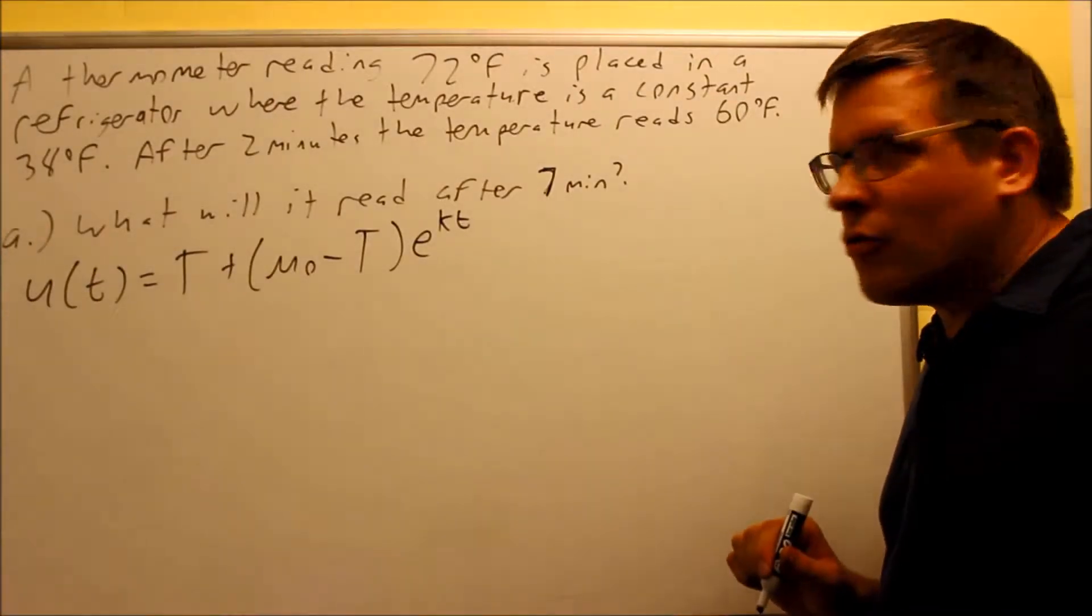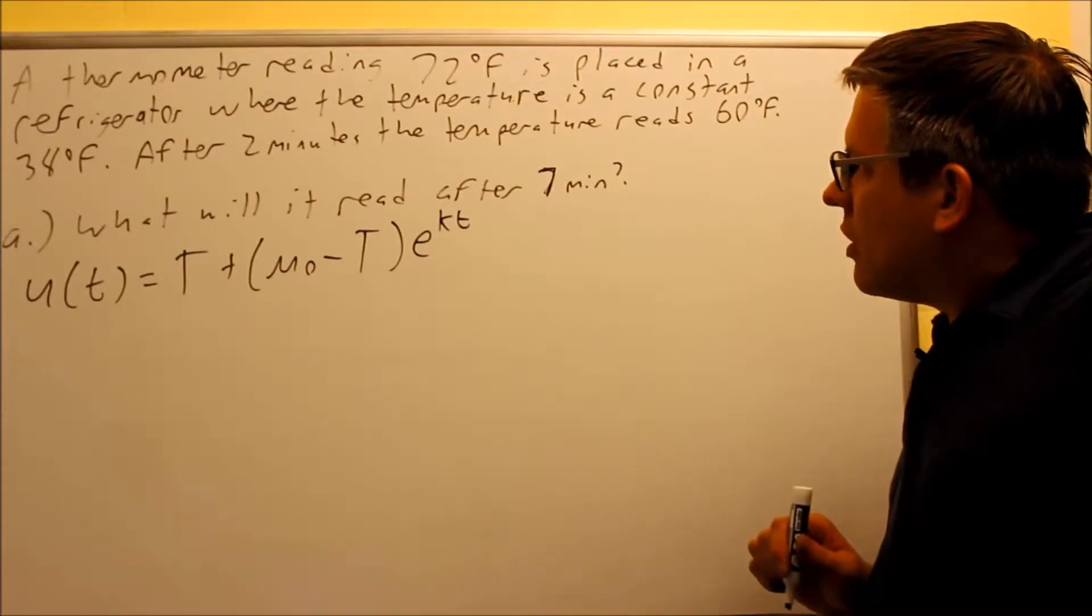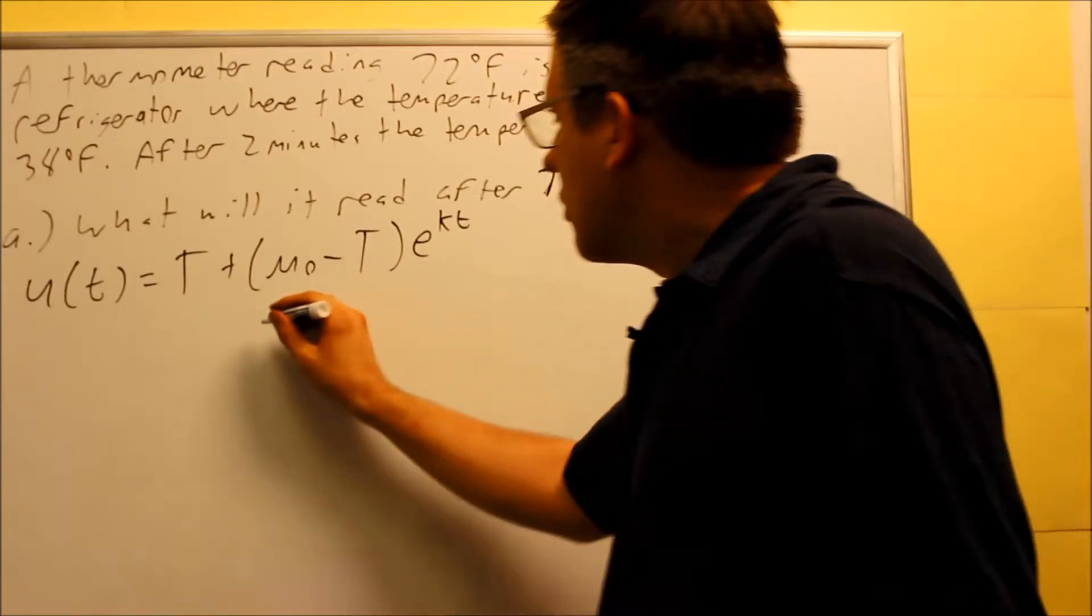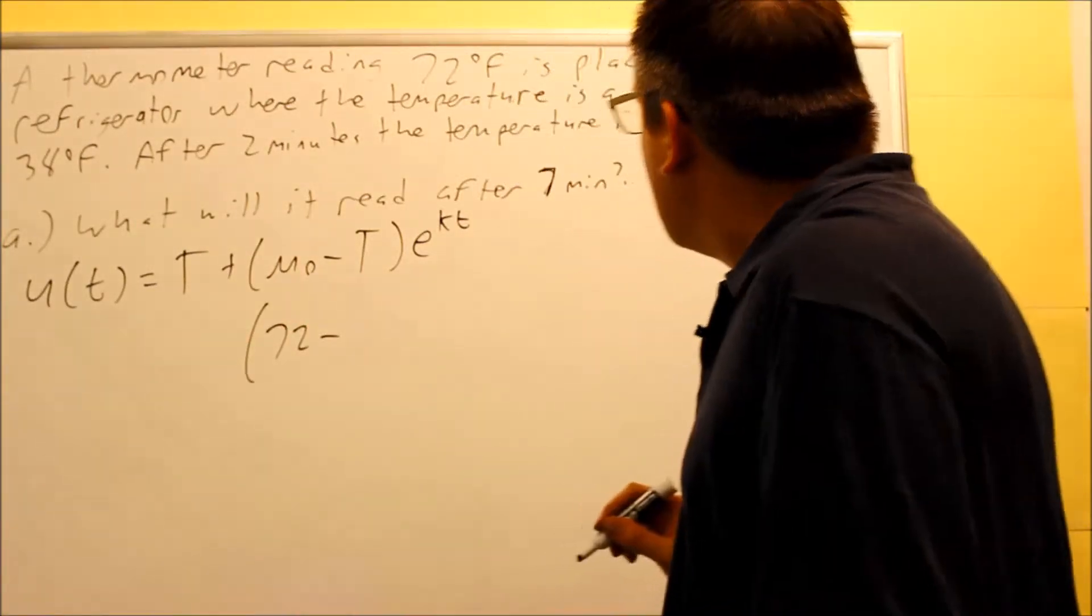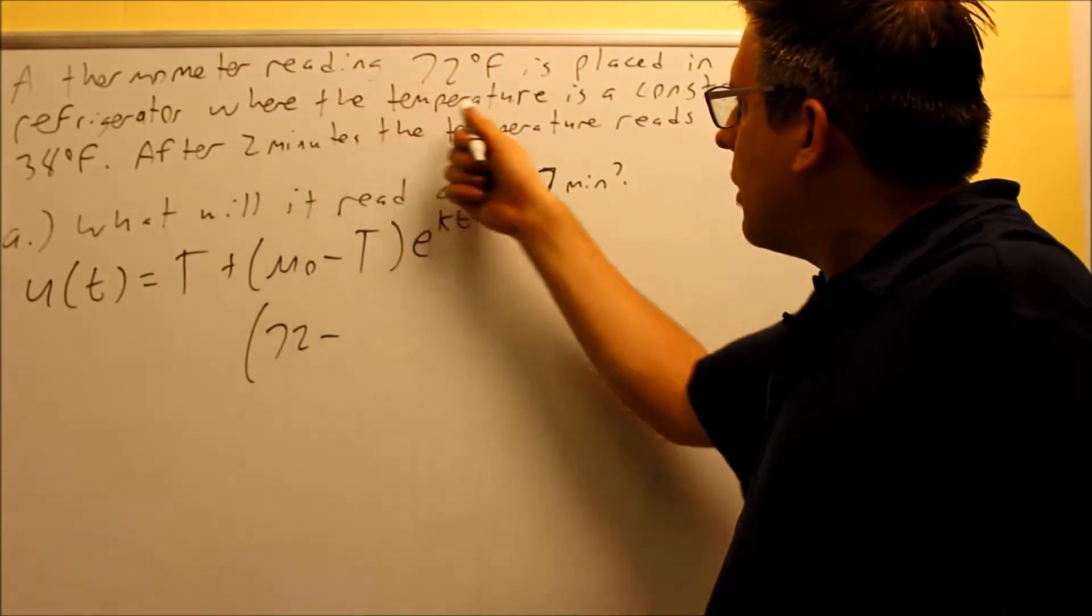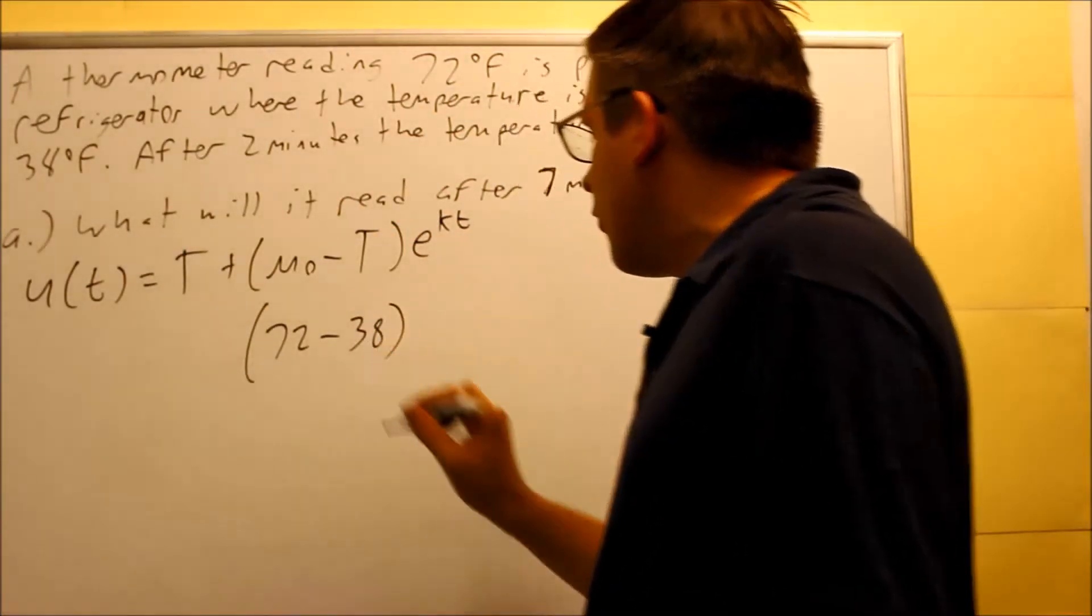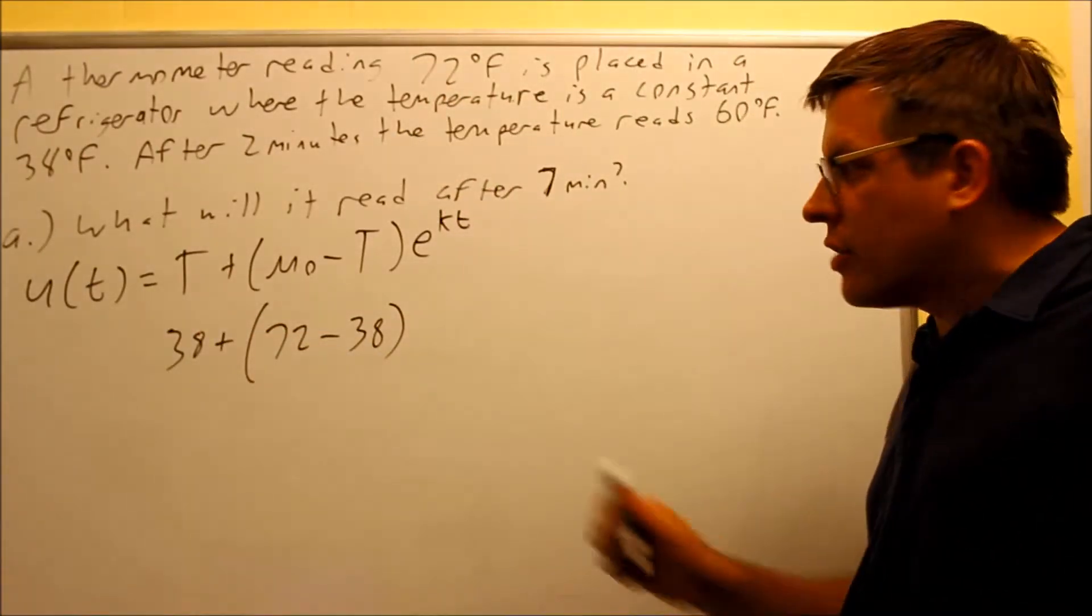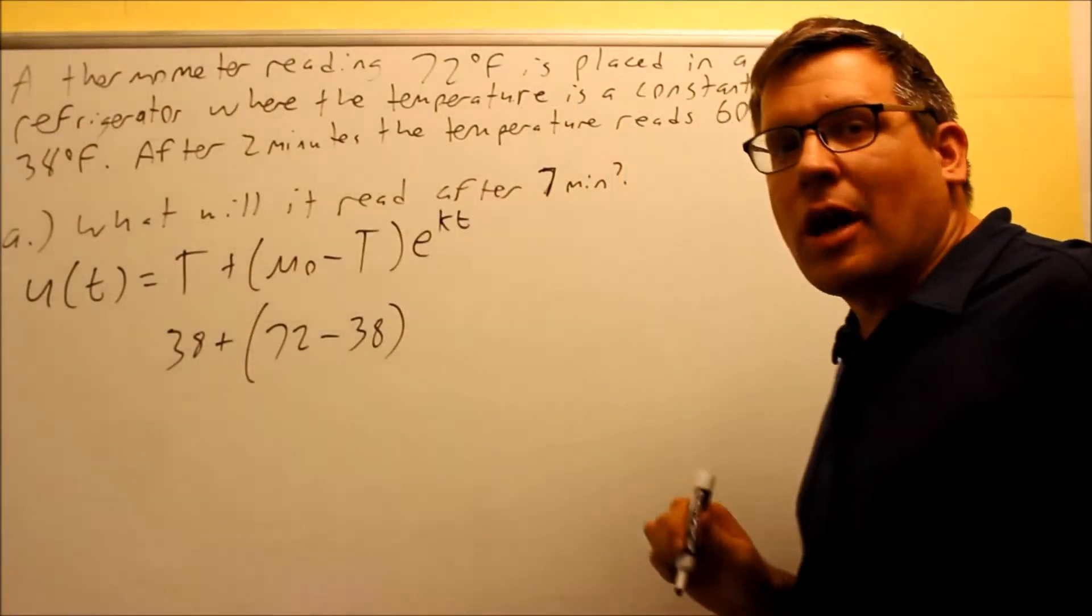Let's put in the information that's provided. The temperature is reading 72 degrees, that's the initial temperature before cooling, so that's μ₀. It's placed in the refrigerator where the temperature is a constant 38 degrees, so I'm going to put 38 in for big T in two places. That's your temperature of the surrounding atmosphere.